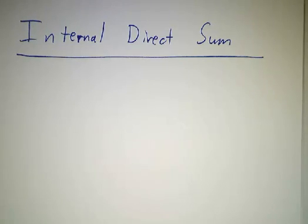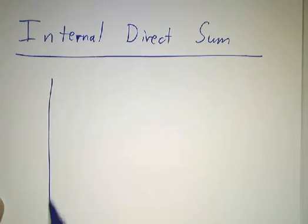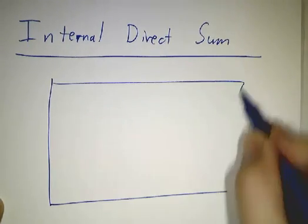The second construction we're going to talk about is called an internal direct sum. So for the internal direct sum, let's suppose that we've got some big vector space V.